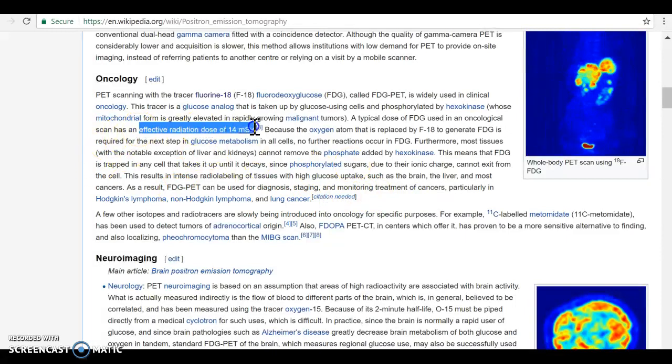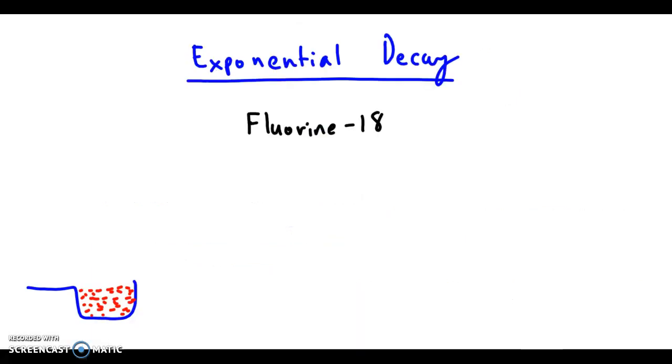It has some effective radiation dose. They're really careful about how much they put inside our body, how much will decay, but it does follow all the principles of exponential decay. So here we go. We've got a cup of this fluorine-18. What do we mean when we say it decays?